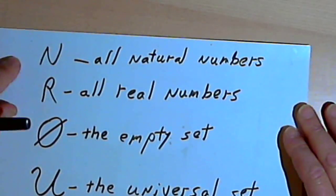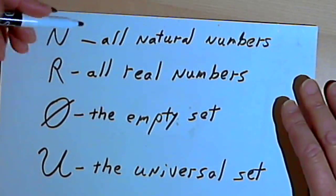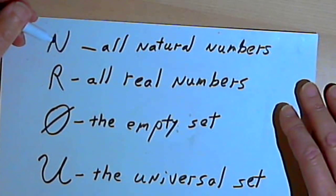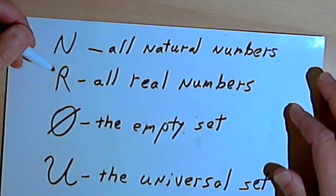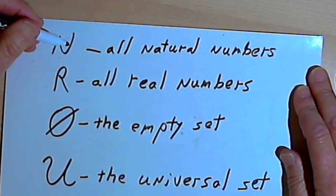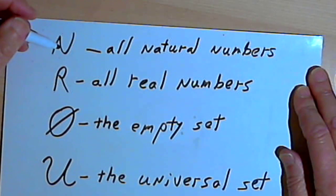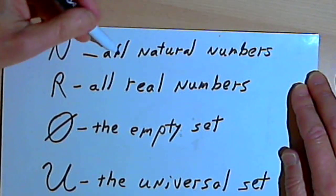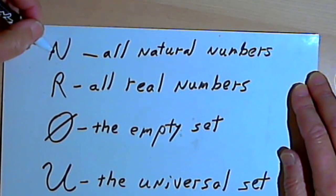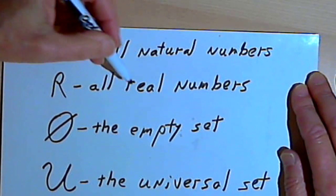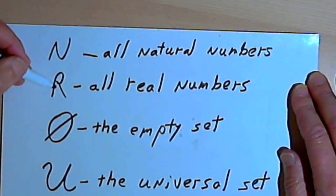A few more things. I said earlier that sets are usually designated with capital letters. There are some sets which are used frequently and the letters that we use for them are more or less standard. So if you want to talk about all natural numbers, usually the set of all natural numbers is going to be shown with a capital N. If you want to show all real numbers, you'd use a capital R.